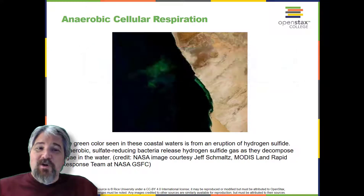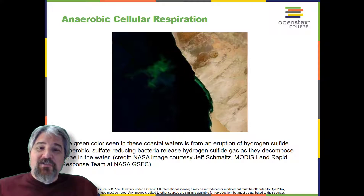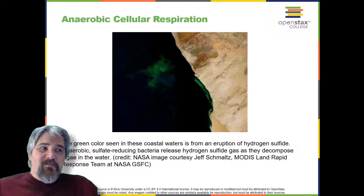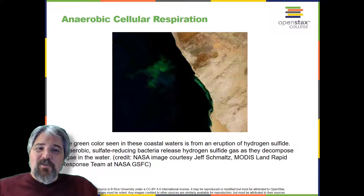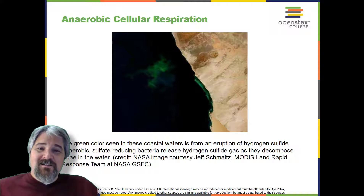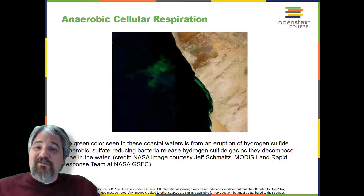Obligate anaerobes live and grow in the absence of molecular oxygen. Oxygen is a poison to these microorganisms and kills them upon exposure. Clostridia are very good at forming spores that are resistant to oxygen, so they can tolerate an oxygen environment when they're not metabolically active. It should be noted that all forms of fermentation except lactic acid fermentation produce gas. The production of a particular type of gas is used as an indicator of the fermentation of specific carbohydrates, which plays a role in the laboratory identification of bacteria.